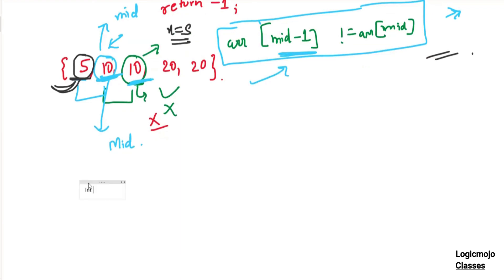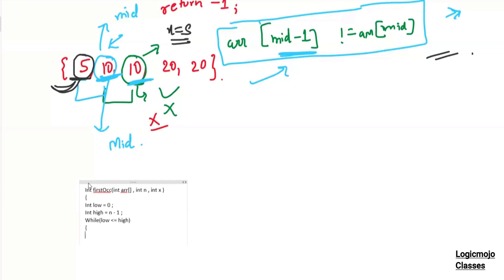Let's now write the code. If you can code in less time when targeting big companies, you have more time to think. So let's say we have to find the first occurrence — we are given an array, the length of the array n, and we are given X. We'll use binary search because we have to optimize over the O(n) approach. The binary search code is the same for everything — it's low equals zero and high equals n minus one. While low is less than equal to high, this is our main code for binary search. We'll find the middle as low plus high divided by two.